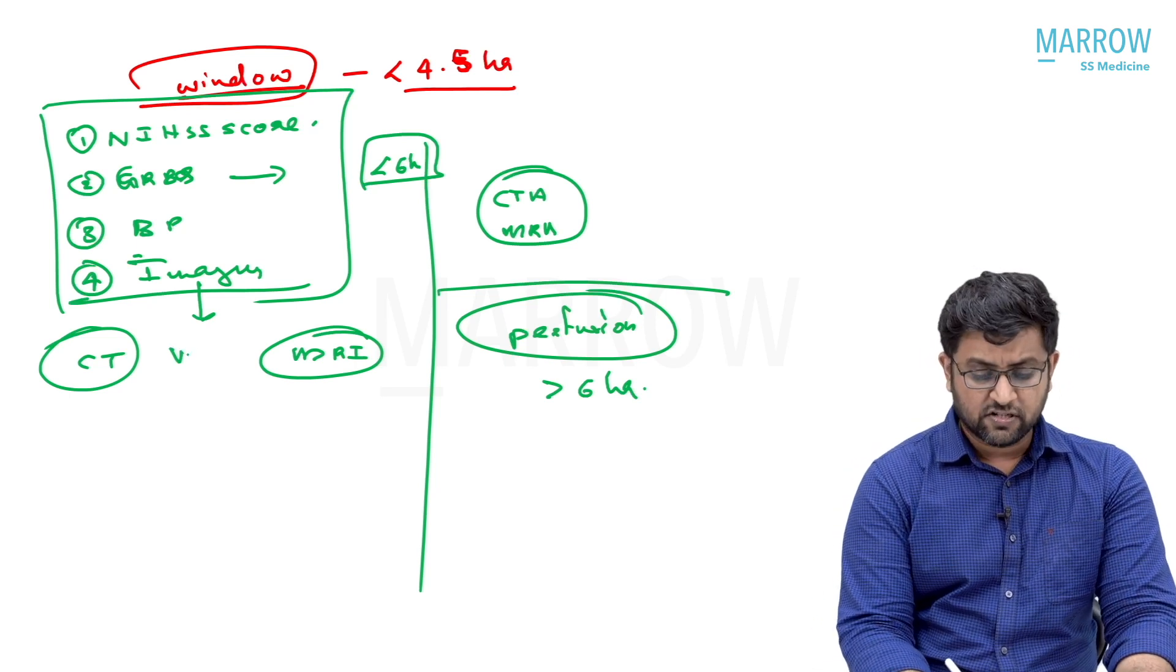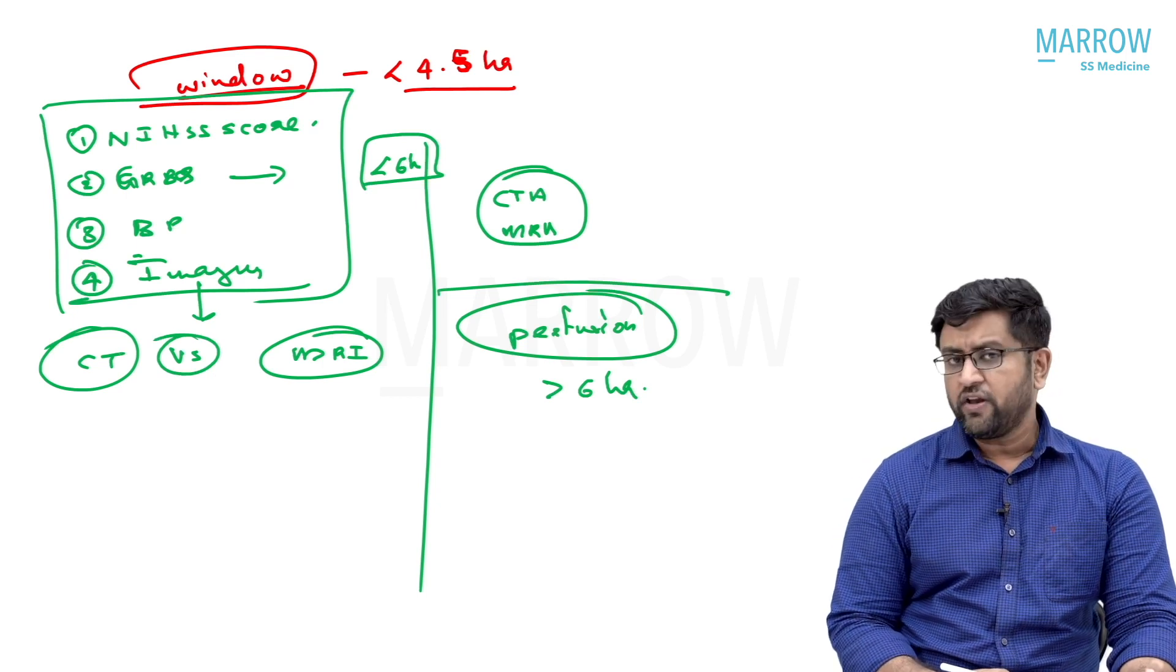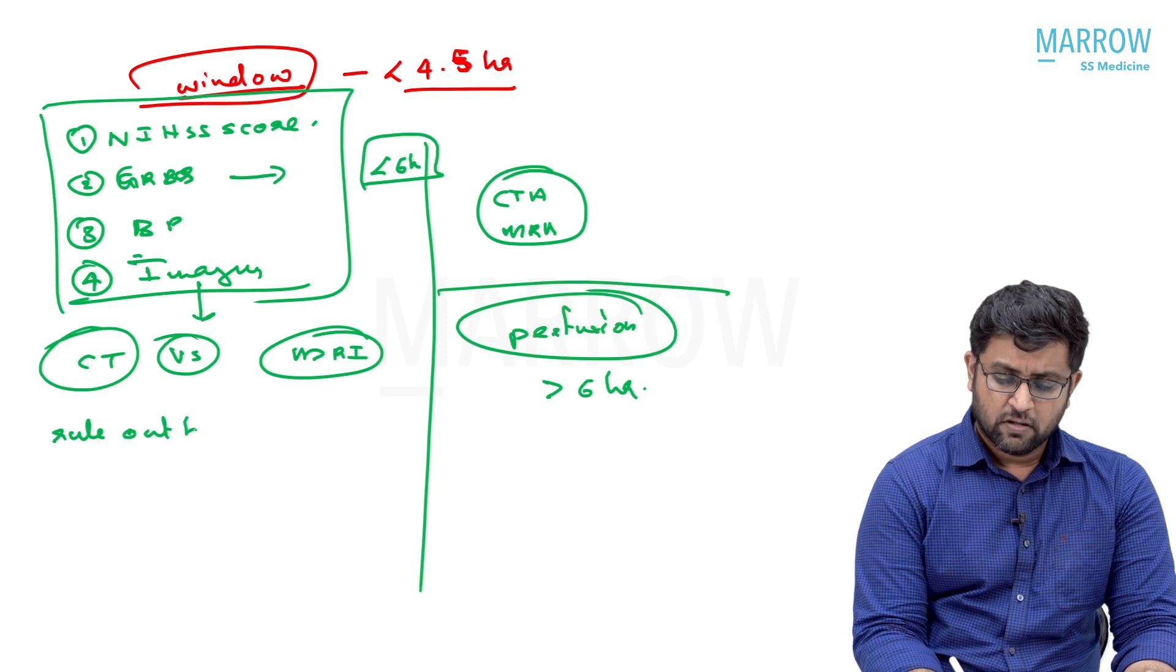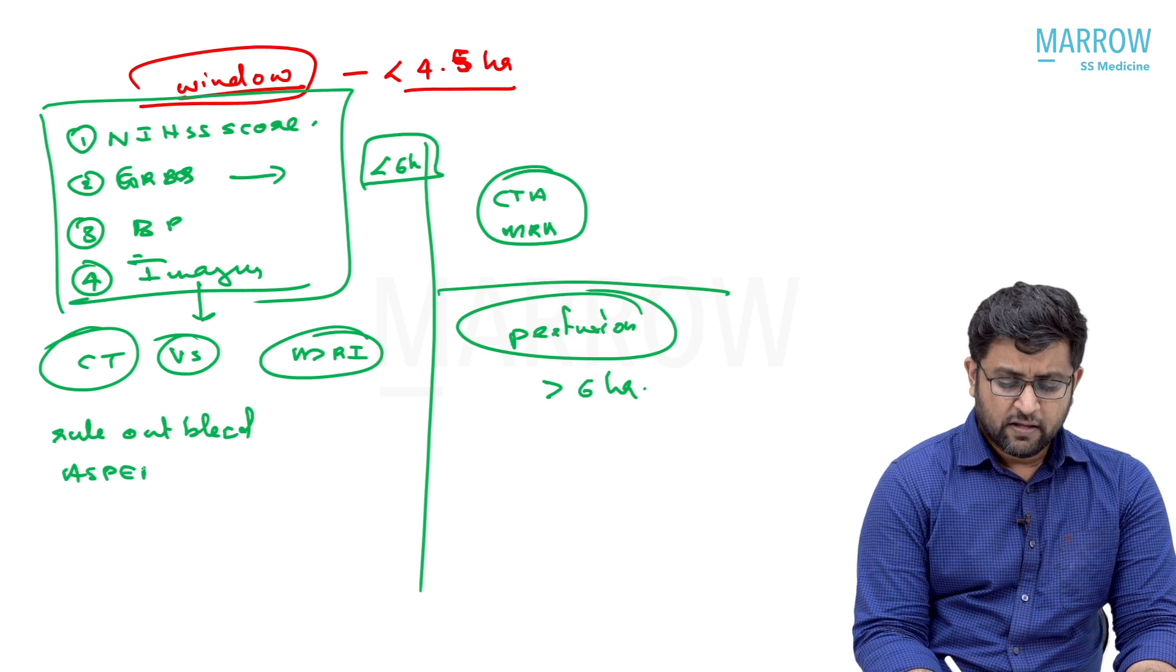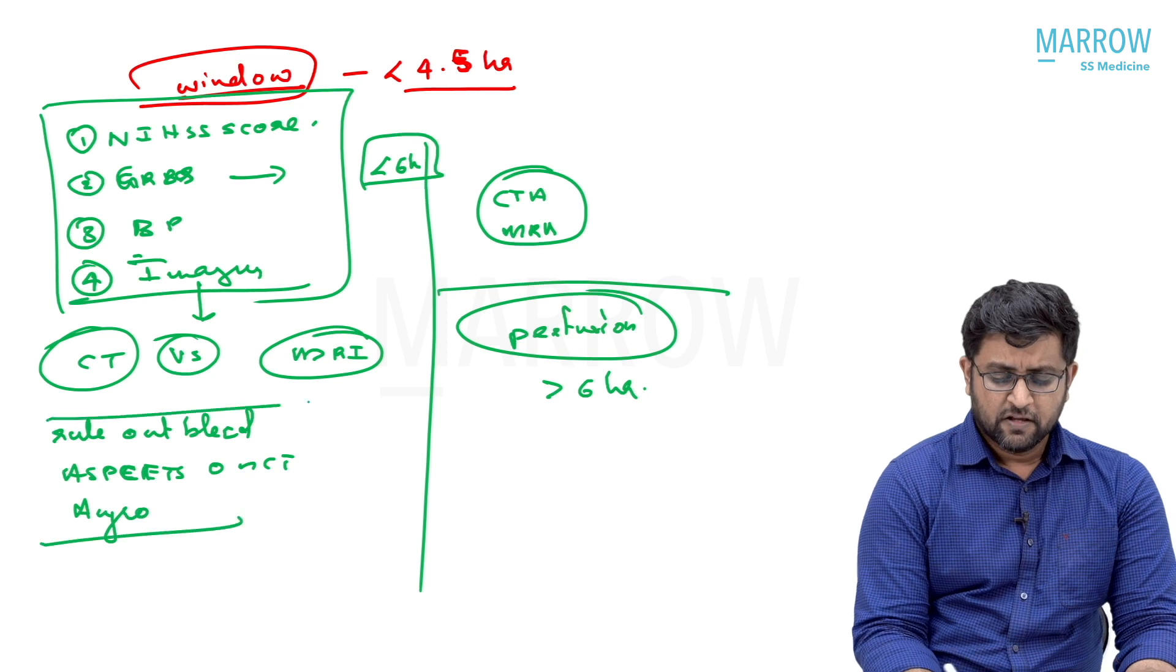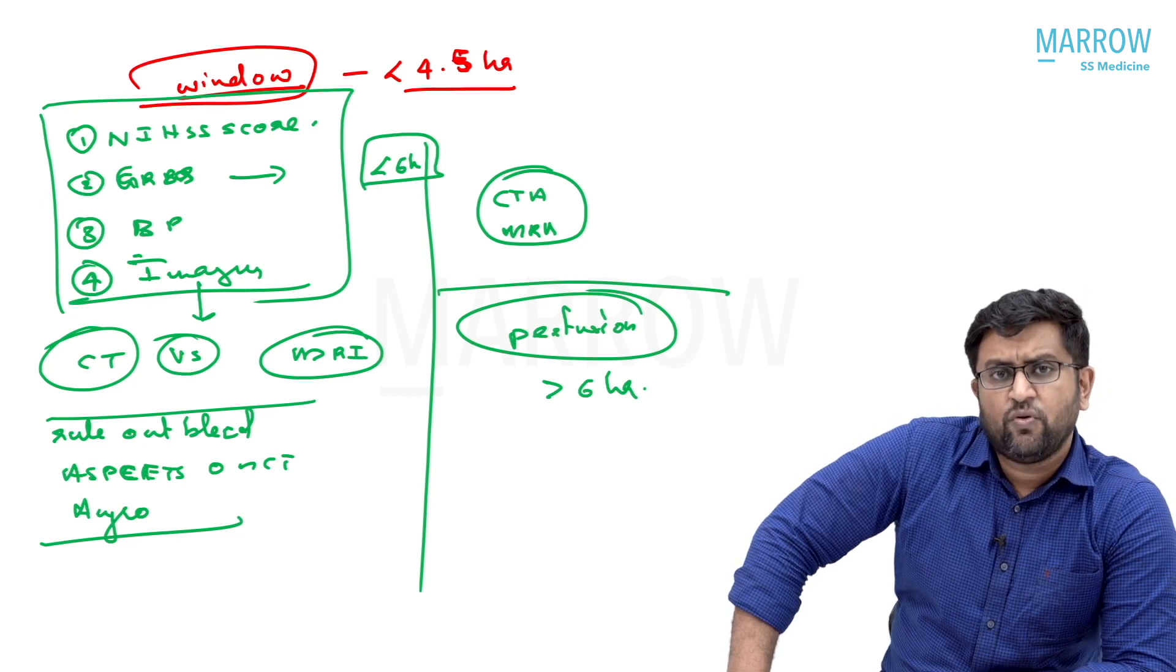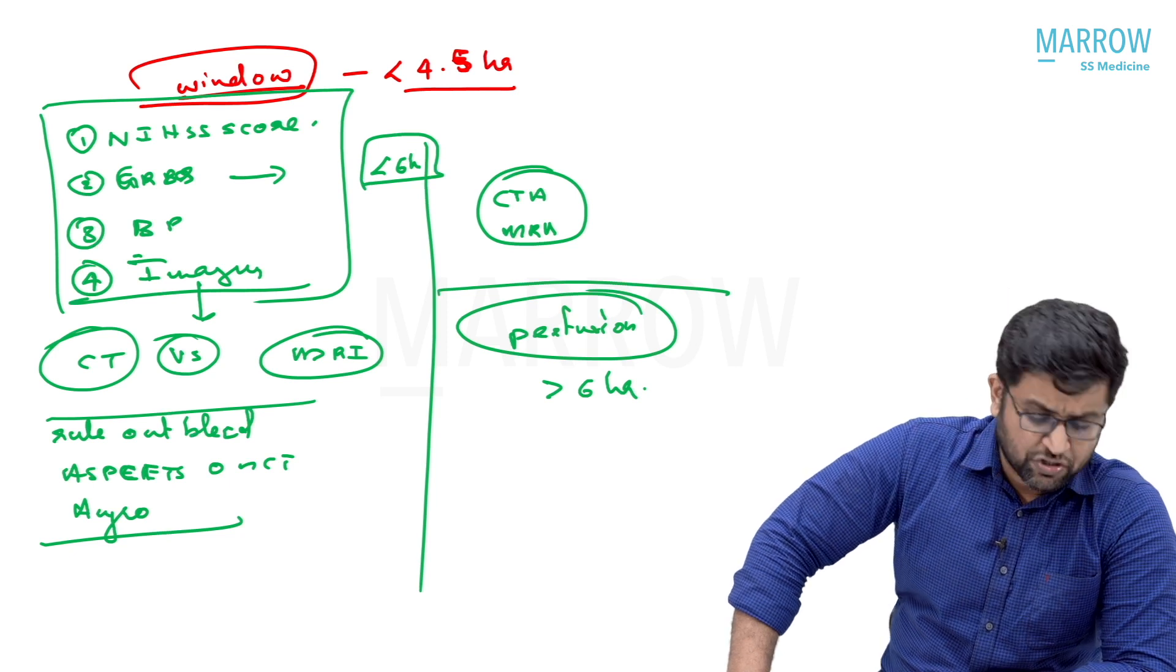For CT versus MRI, which one to choose? The guidelines say there is no need of MRI. CT-based protocol is enough because your aim is to rule out bleed. Second is to find the ASPECTS score on CT. Third is to see the angiographic image. We don't need an MRI. You should directly go with CT because MRI is time-taking. You will waste half an hour while CT and CT angiogram you can do in maximum five to ten minutes.